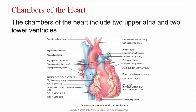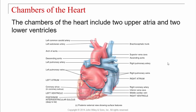The chambers of the heart include two upper atria and two lower ventricles — an atrium on each side and a ventricle on each side. From the back, we can see the right atrium, left atrium, right ventricle, and left ventricle.